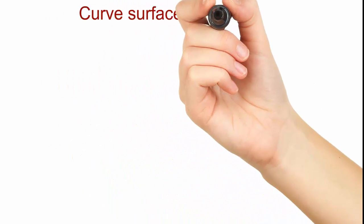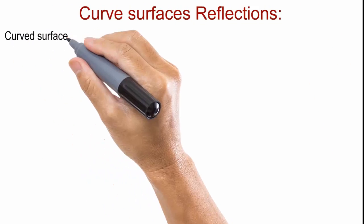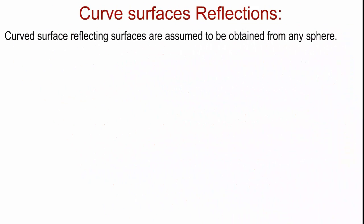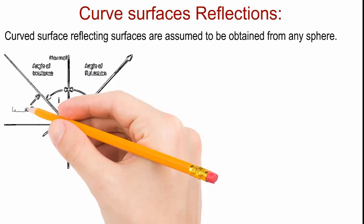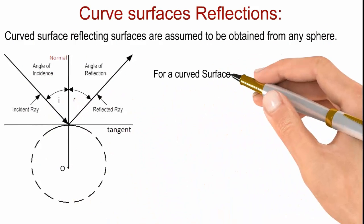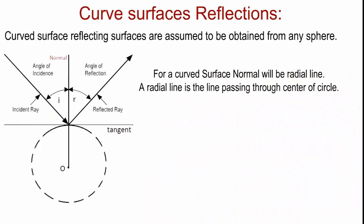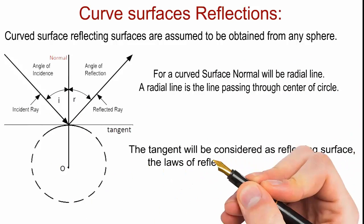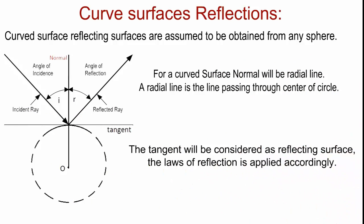Let us see an example of curved surface reflection. Curved reflecting surfaces are assumed to be obtained from any sphere. For a curved surface, normal will be a radial line. A radial line is the line passing through the center of the circle. A tangent will be considered as reflecting surface. The laws of reflection is applied accordingly.